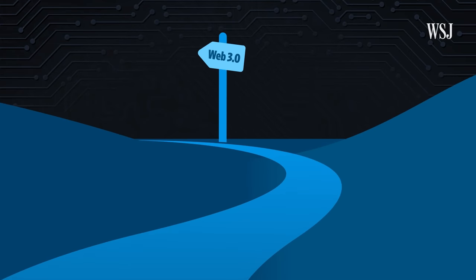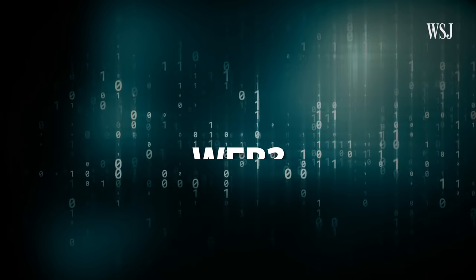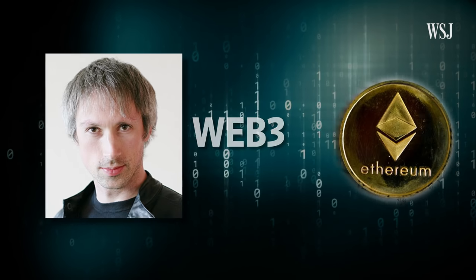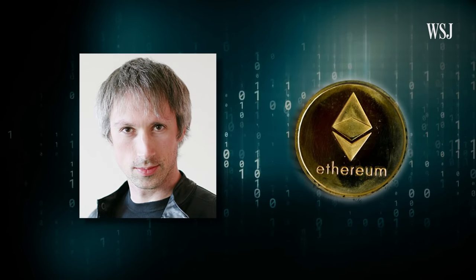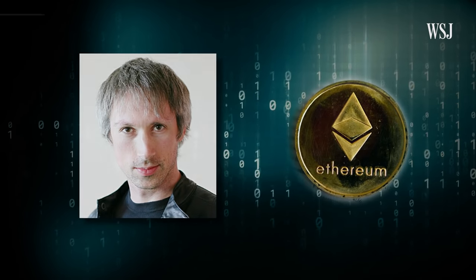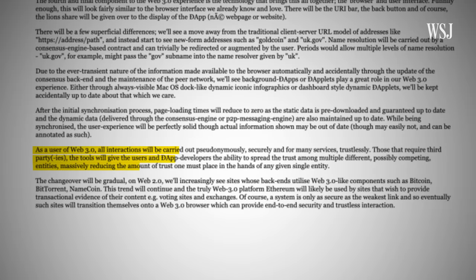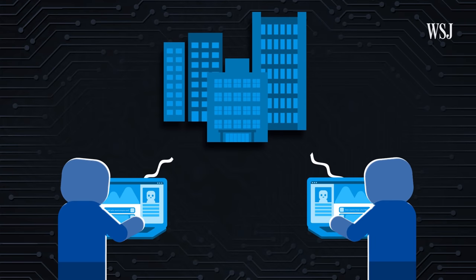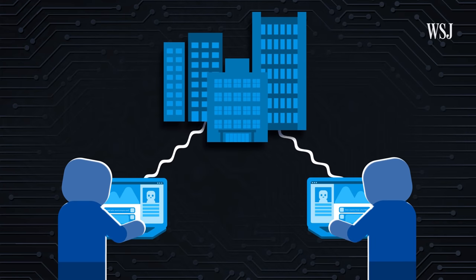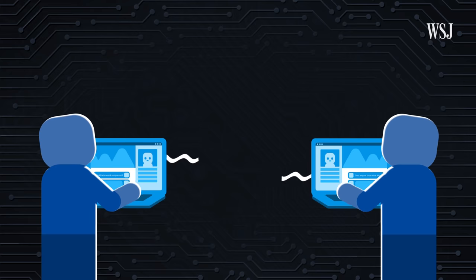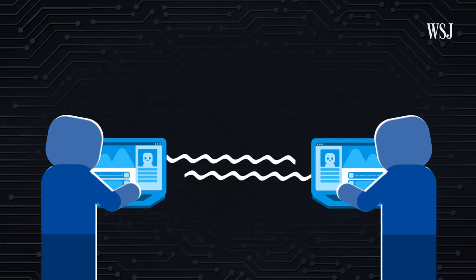Here's where the vision for Web 3.0 comes in. The term Web 3.0 was first coined by one of the creators of the Ethereum blockchain, Gavin Wood. In a 2014 blog post, Wood envisioned Web 3.0 as an open and decentralized version of the internet. Theoretically, users would be able to exchange money and information on the web without the need for a middleman like a bank or a tech company.